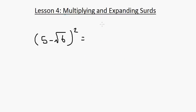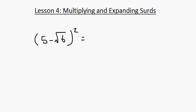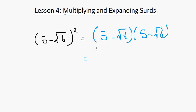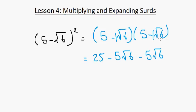Last example: 5 minus root 6 all squared. Expanding: 5 times 5 is 25. Then 5 times minus root 6 gives minus 5 root 6, and again minus 5 root 6 — remember there's a hidden 1 as coefficient. Finally, minus root 6 times minus root 6 is positive 6. So we get 25 plus 6 is 31, and minus 10 root 6, giving a final answer of 31 minus 10 root 6.